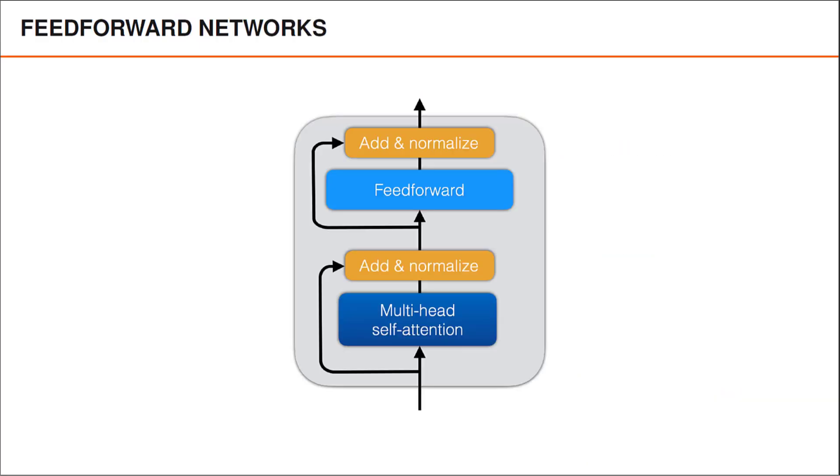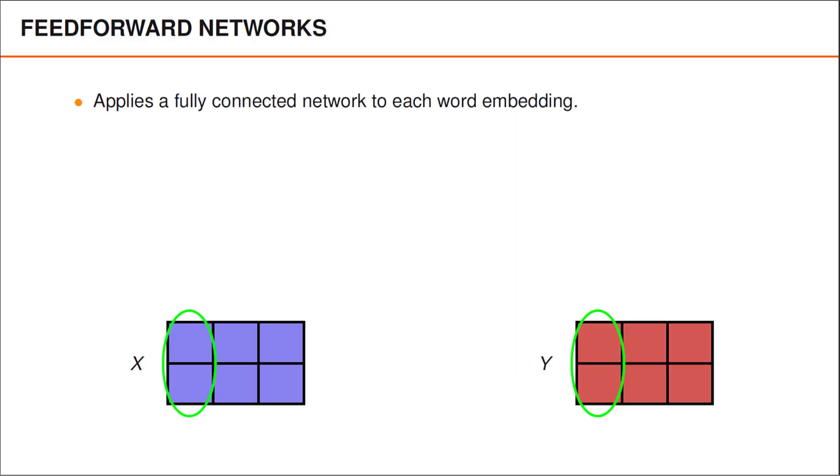We have now covered multi-head attention and the add and normalize layer. The only remaining layer to describe is the feedforward network. In this layer, we apply a fully connected feedforward network to each word embedding. In the illustration below, x is the input and y the output from this layer, and we again assume that there are only three words in our input sequence.